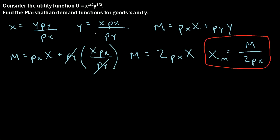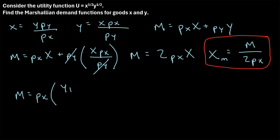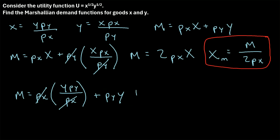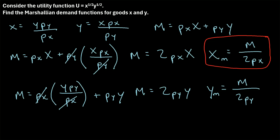We repeat the same process to find the Marshallian demand function for good y. Plugging in the expression for x into the budget constraint, we get m equals p_x times (p_y times y divided by p_x) plus p_y times y. The p_x cancels, leaving p_y times y plus p_y times y, which is 2 p_y times y. Dividing both sides by 2 p_y, we find y_m equals m divided by 2 p_y. These two demand functions tell us the quantities that maximize utility based on income and prices.